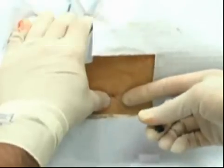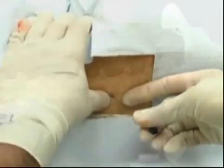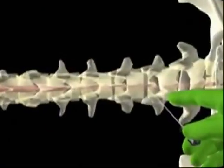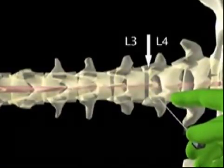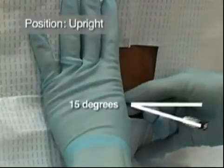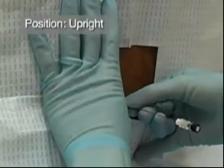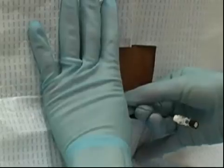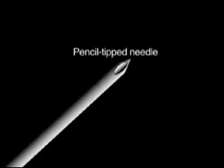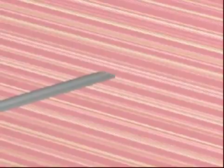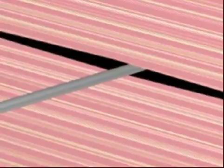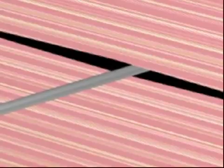With the stylet firmly in place, insert the needle in the midline at the superior aspect of the inferior spinous process, directing it at an angle of approximately 15 degrees, as if aiming at the patient's umbilicus. Either use a pencil-tip needle or ensure that the bevel of the needle is in the sagittal plane, in order to spread rather than cut the fibers of the dural sac. These fibers run parallel to the spinal axis. Use of this needle position should theoretically decrease the leakage of cerebrospinal fluid.